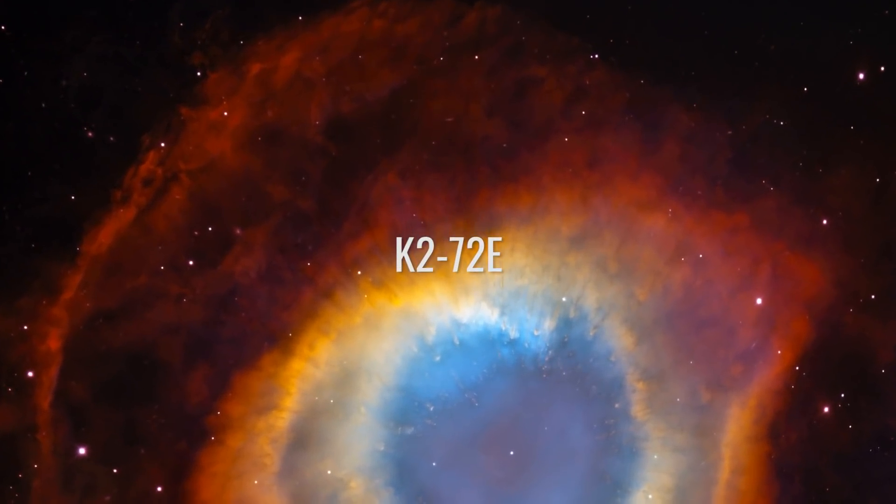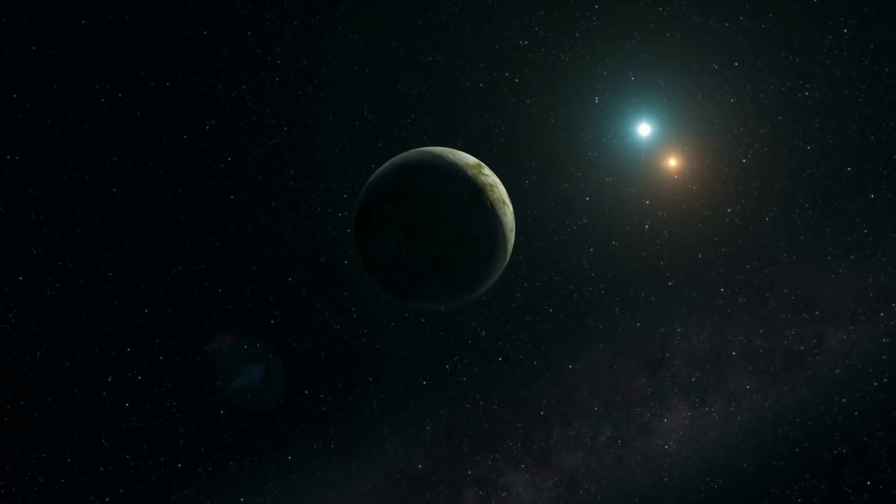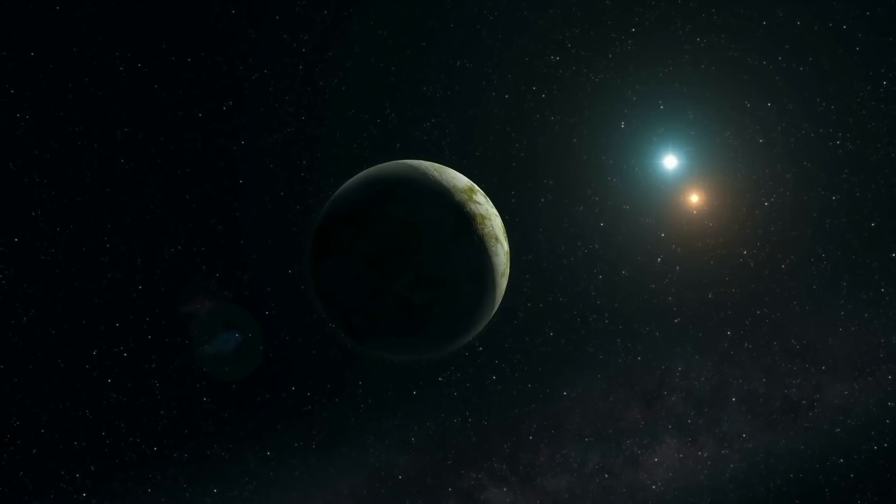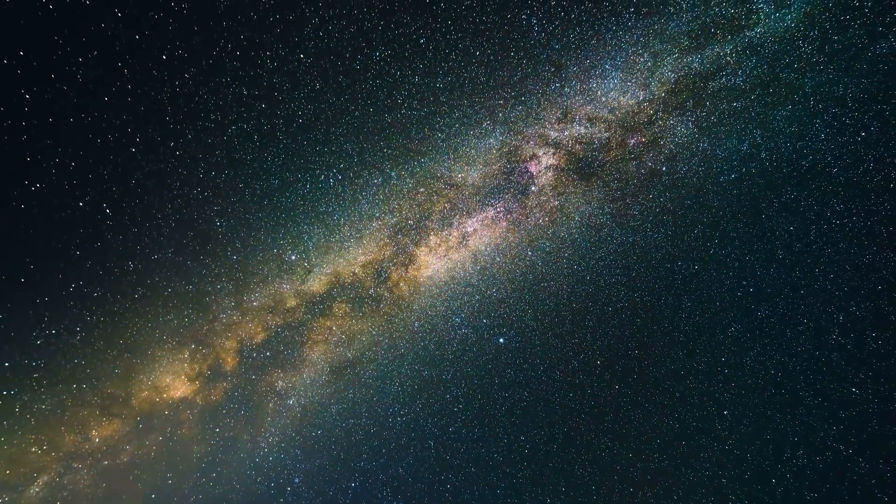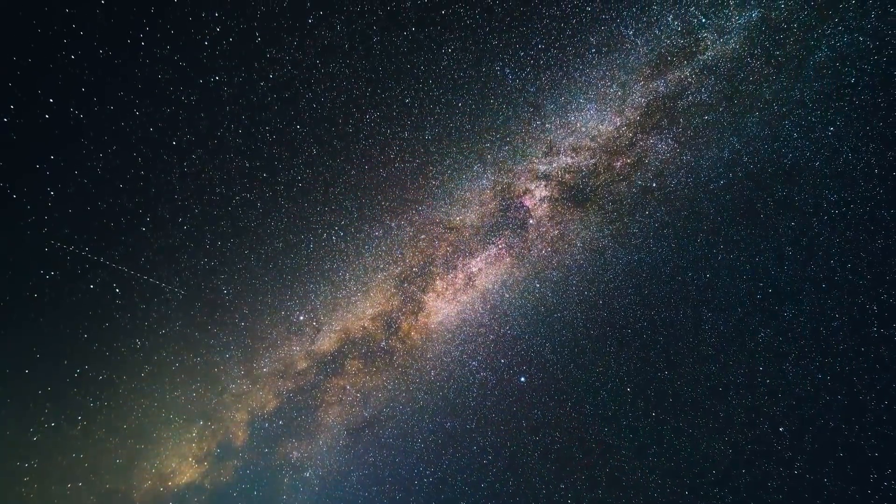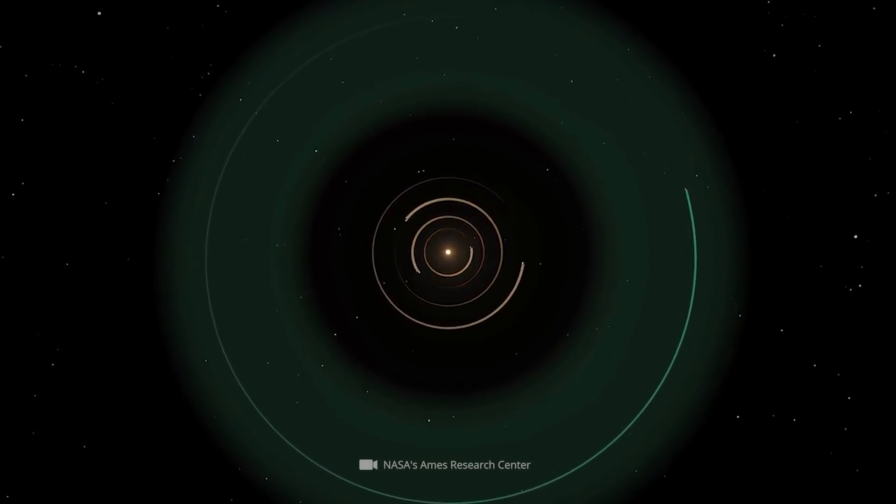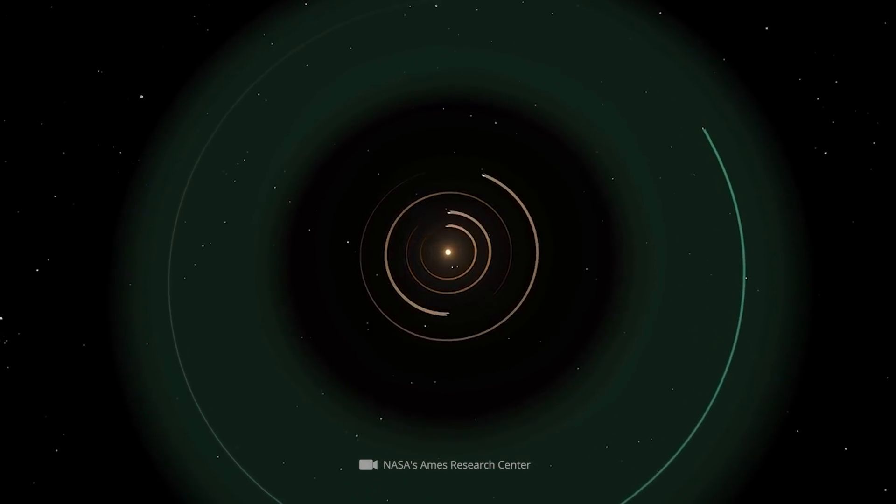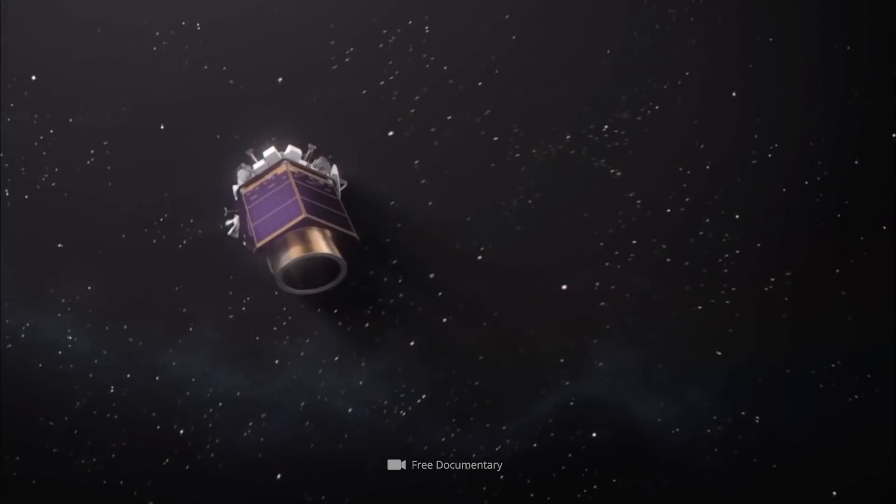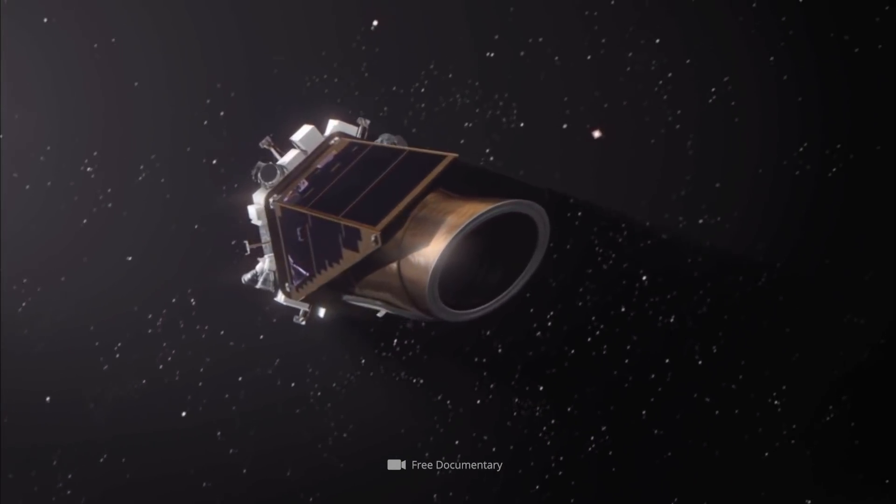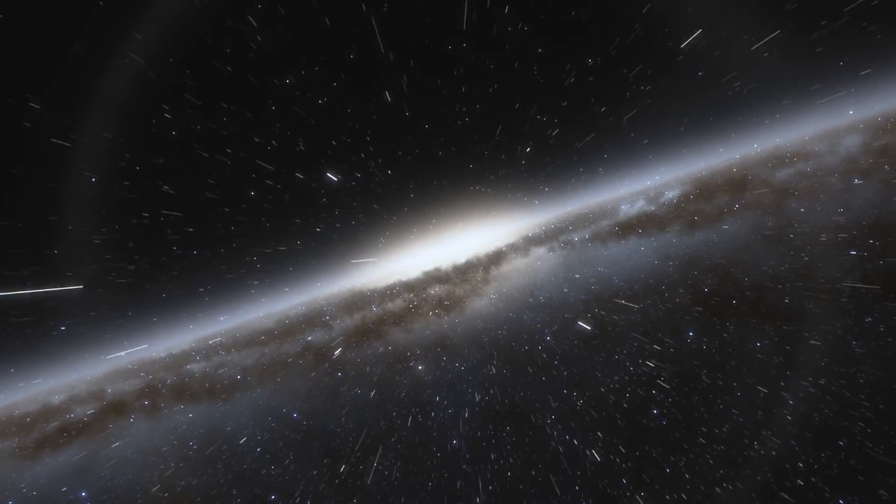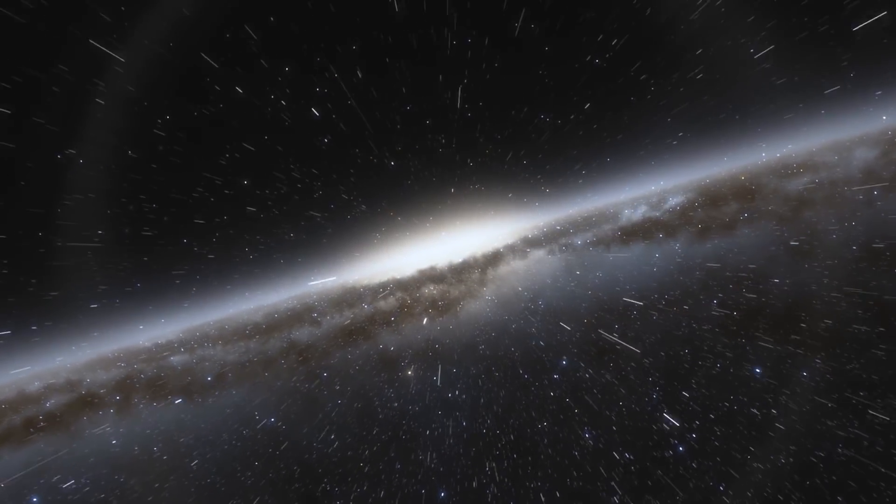K2-72E. In 2016, researchers on the Kepler mission discovered the planet K2-72E, also known as EPIC 206209135.04. This exoplanet is likely rocky and orbits its star in the habitable zone. The red dwarf star K2-72 was observed by the Kepler spacecraft as part of the second light mission.